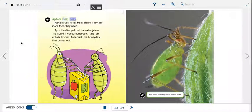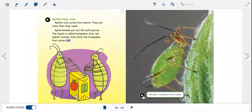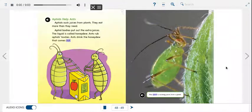Aphids help ants. Aphids suck juices from plants. They eat more than they need. Aphid bodies put out the extra juices. The liquid is called honeydew. Ants rub aphids' bodies. Ants drink the honeydew that comes out.